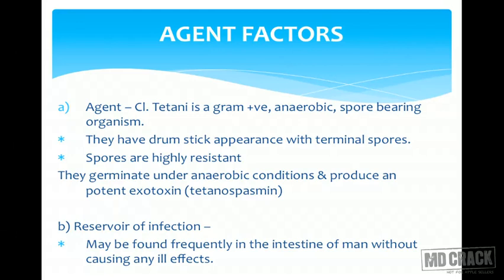Agent factors: Clostridium tetani is a gram-positive, anaerobic, spore-bearing organism with a classical drumstick appearance seen on slides in microbiology. The spores of Clostridium tetani are highly resistant — this is why whenever you injure yourself or get pricked by a nail, a tetanus injection is warranted. The spores are found in the atmosphere, in the ground, and in cow dung or other organic matter, and can last for a very long time.